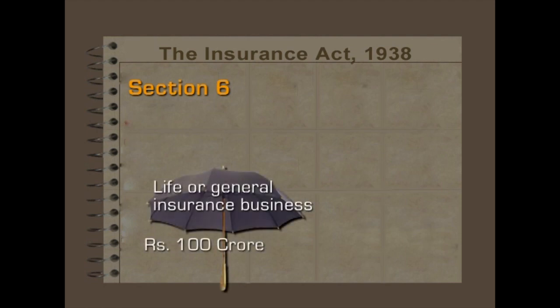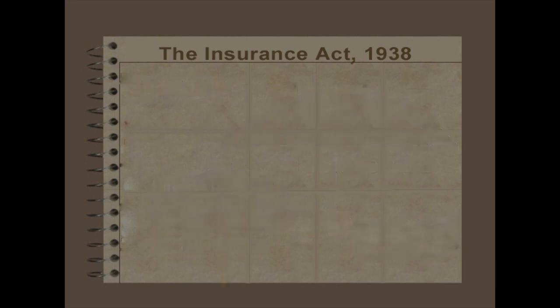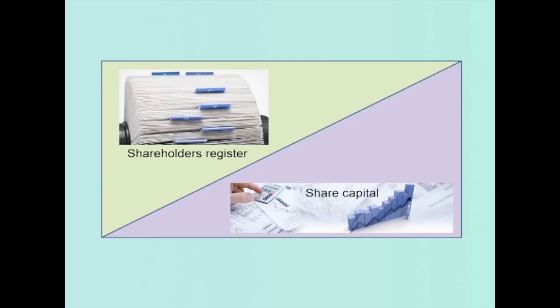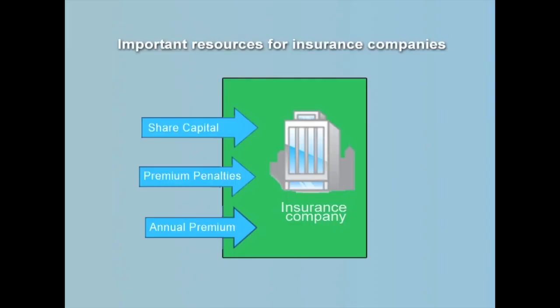According to Section 6 of the Insurance Act 1938, every insurance company requires a minimum of Rs. 100 crores as share capital for starting the life or general insurance business and Rs. 200 crores for starting the re-insurance business. The share capital shall be in equity shares only with a single face value as stated in Section 6A. Every insurance company should maintain the shareholders register and share capital as per the provisions of the memorandum of association within the framework of SEBI. The share capital is one of the important resources of the insurance company.